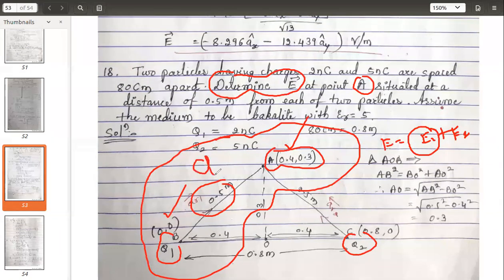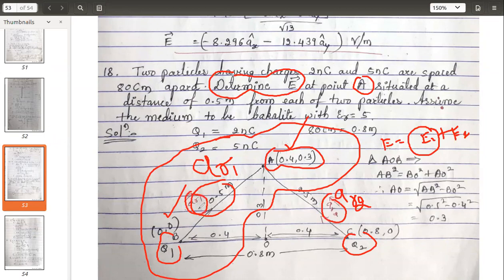And the unit vectors, that is small ar1 and ar2, you can just see on the screen. With the red pen I have shown you ar1 and ar2. The direction is also specified, so let's first find out E1.